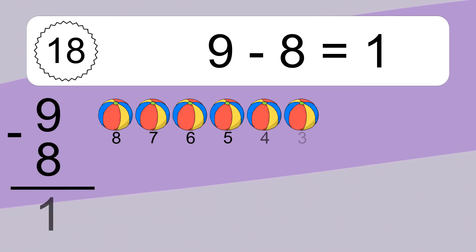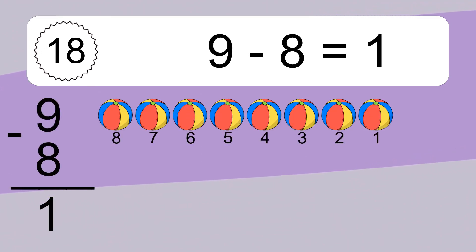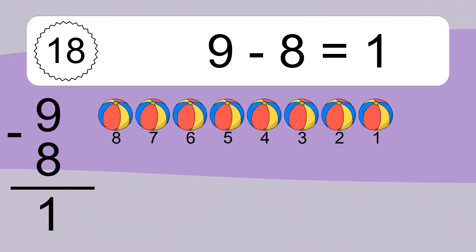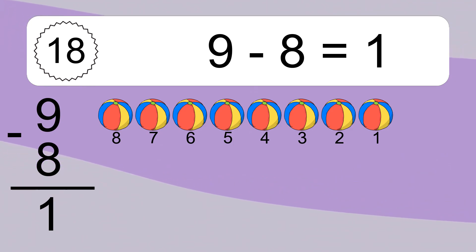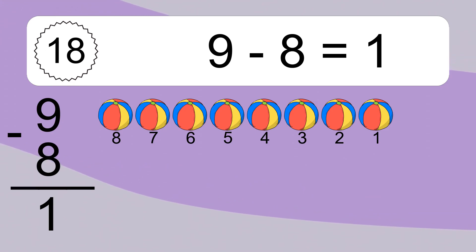9 minus 8 equals 1. Let's count it: 10, 9, 8, 7, 6, 5, 4, 3, 2, 1.